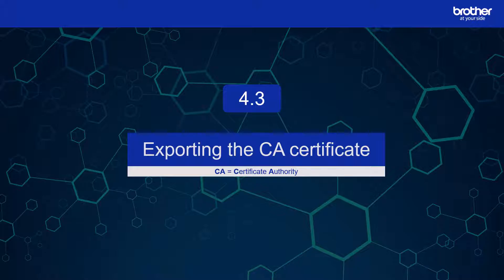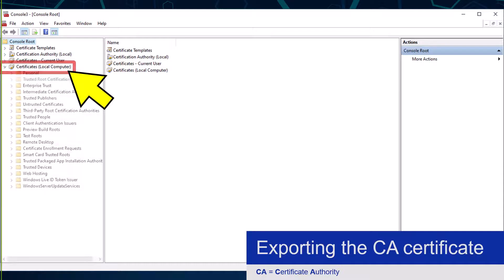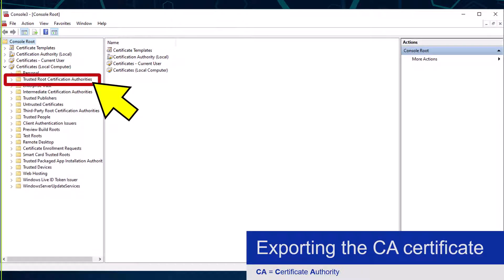In this section I am going to export the CA certificate, which will be required to demonstrate zero trust in the next video of this mini series. If you don't require zero trust you can skip this section and move on to section 4.4. If you do need this, however, you will need to go back to the custom certificate management console and expand the Certificate Local Computer option. From here I need to expand the Trusted Root Certificate Authorities option and select the Certificates sub-option below.